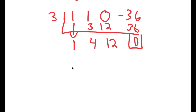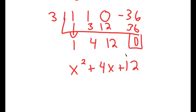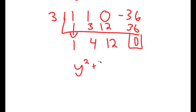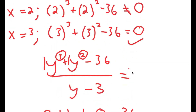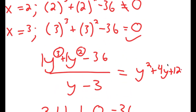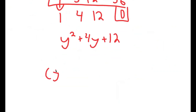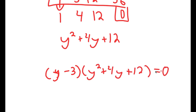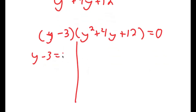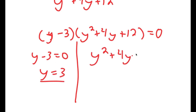These are going to be my coefficients, so I have y squared plus 4y plus 12. This means that y minus 3 times y squared plus 4y plus 12 is equal to 0. So now this gives me two equations: y minus 3 equals 0, meaning y equals 3, which we already know, and y squared plus 4y plus 12 equals 0.